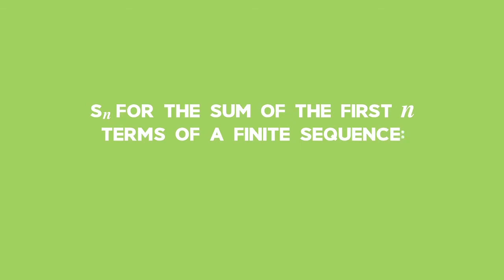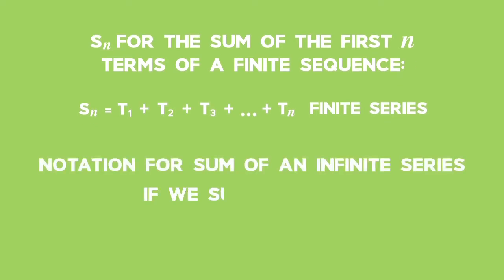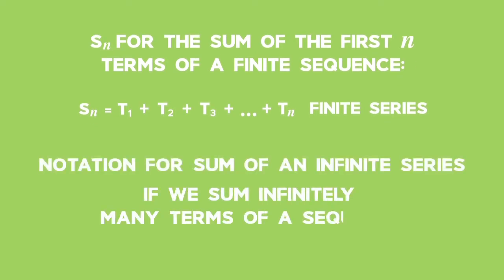We use the symbol Sn for the sum of the first n terms of a finite sequence. Sn is equal to term 1 plus term 2 plus term 3 plus the rest of the terms up to and including term n. When we sum a finite number of terms, we get a finite series. If we sum infinitely many terms of a sequence, we get an infinite series.